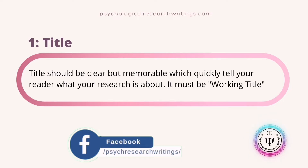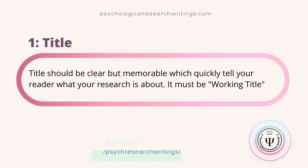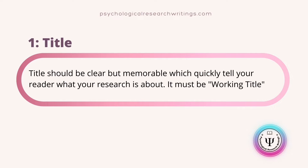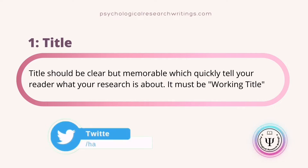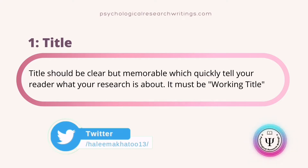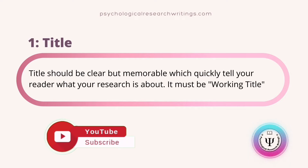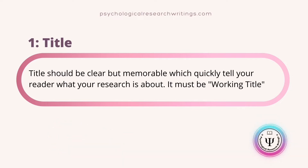The first section is the title. Naming your research is an important part of the research proposal. It should tell the reader in around 25 words or less what you intend to research and how you intend to do it — think of it as a working title. Your title should be clear but memorable, quickly telling your readers what your research is about. If you want to know how to choose an effective working research title, you can watch the linked video available on our channel.